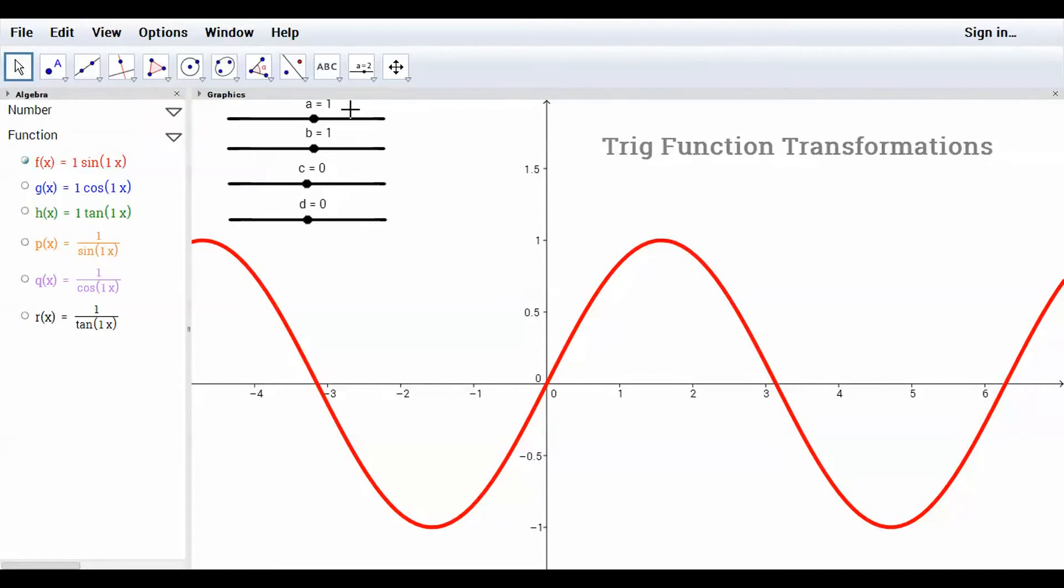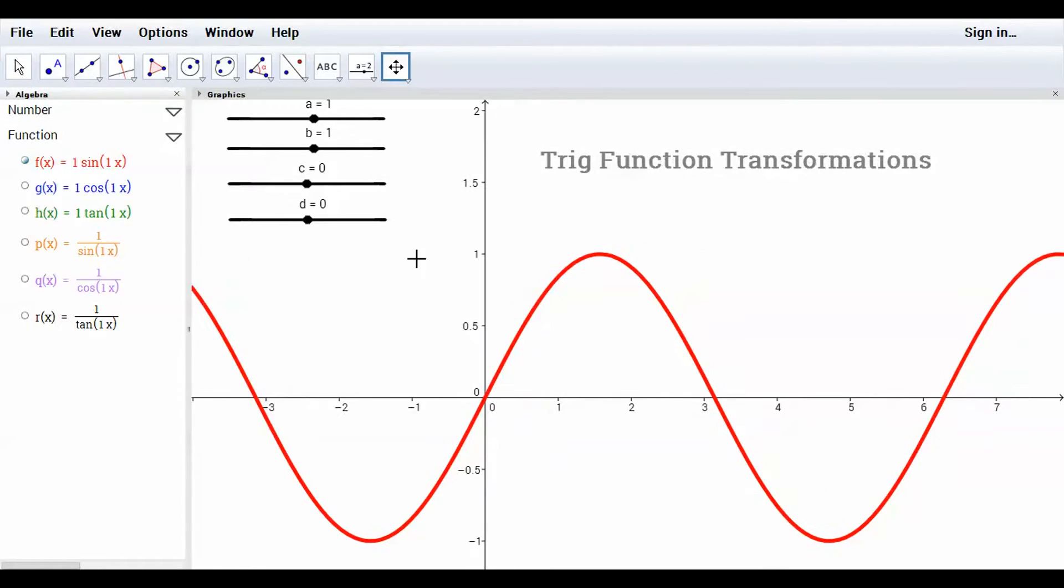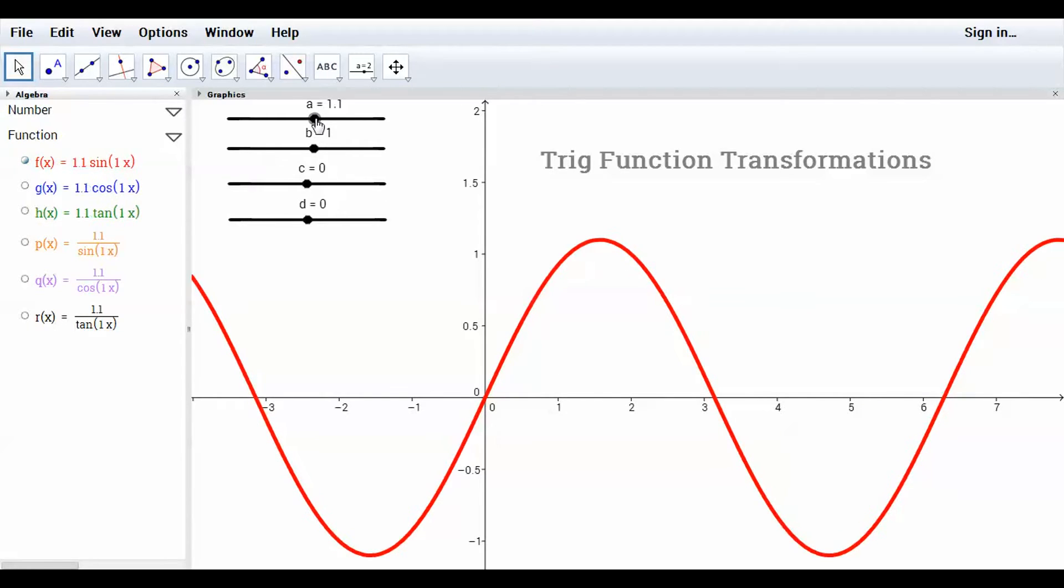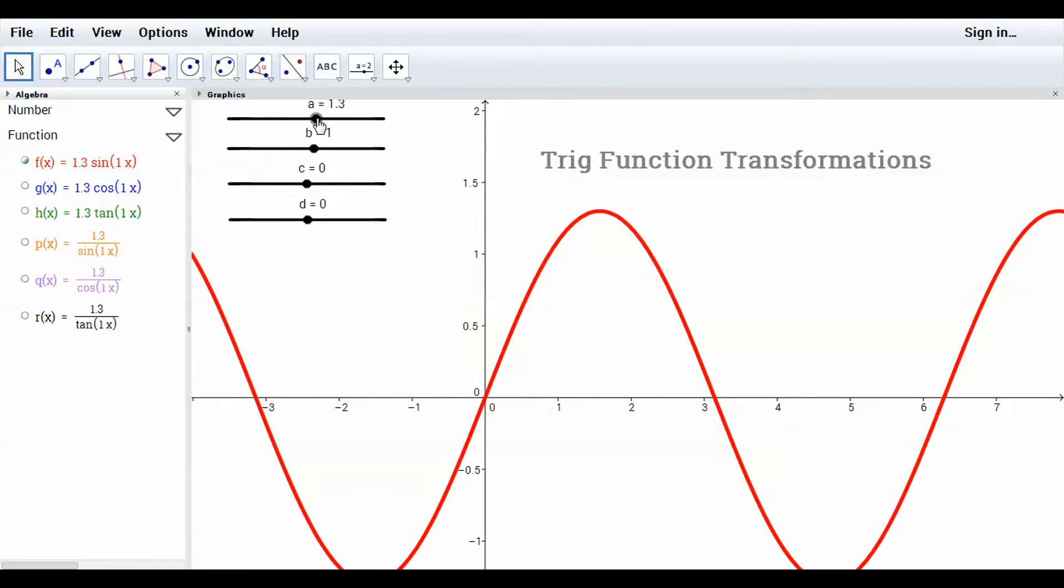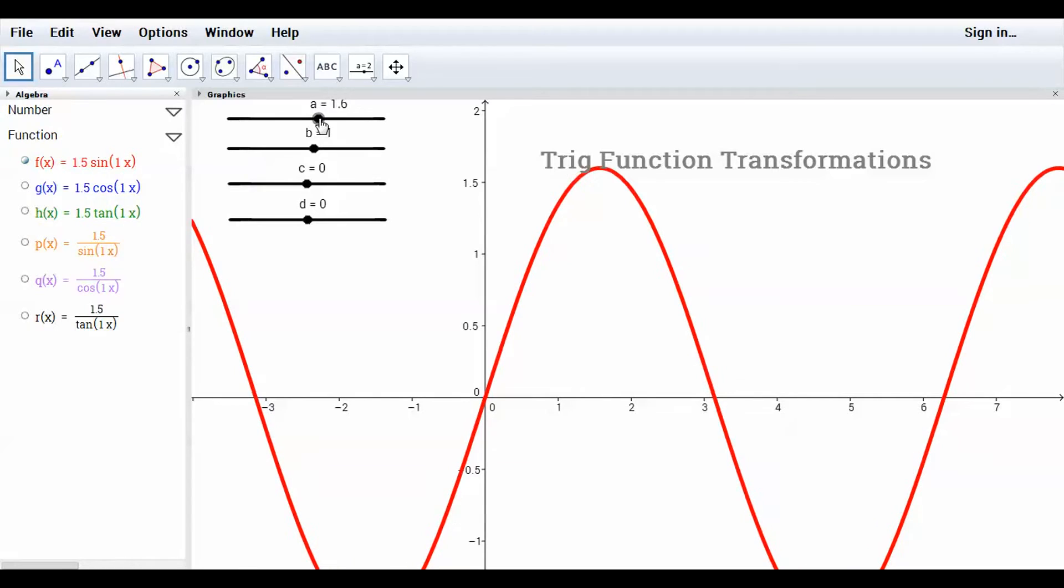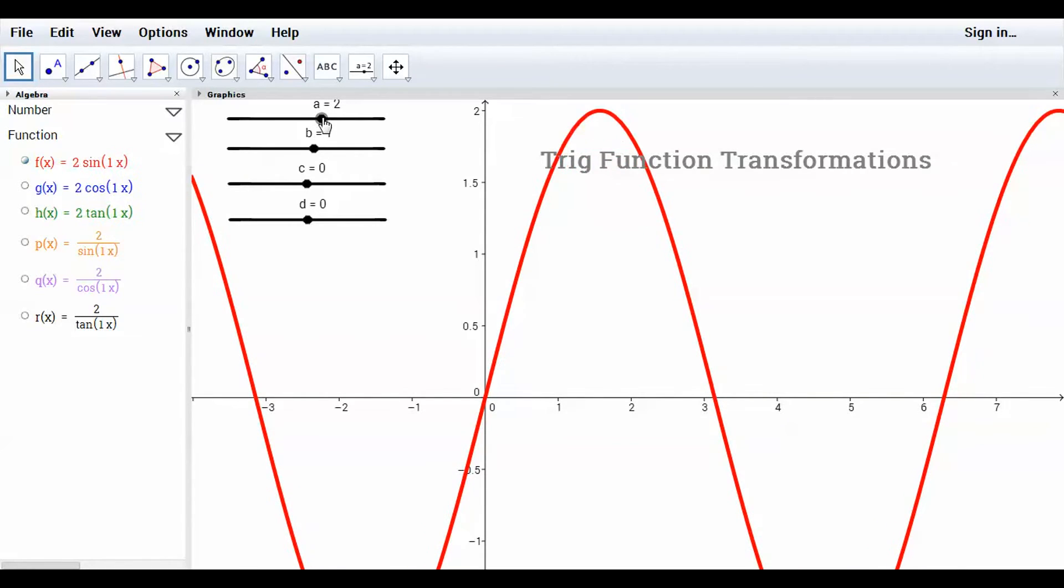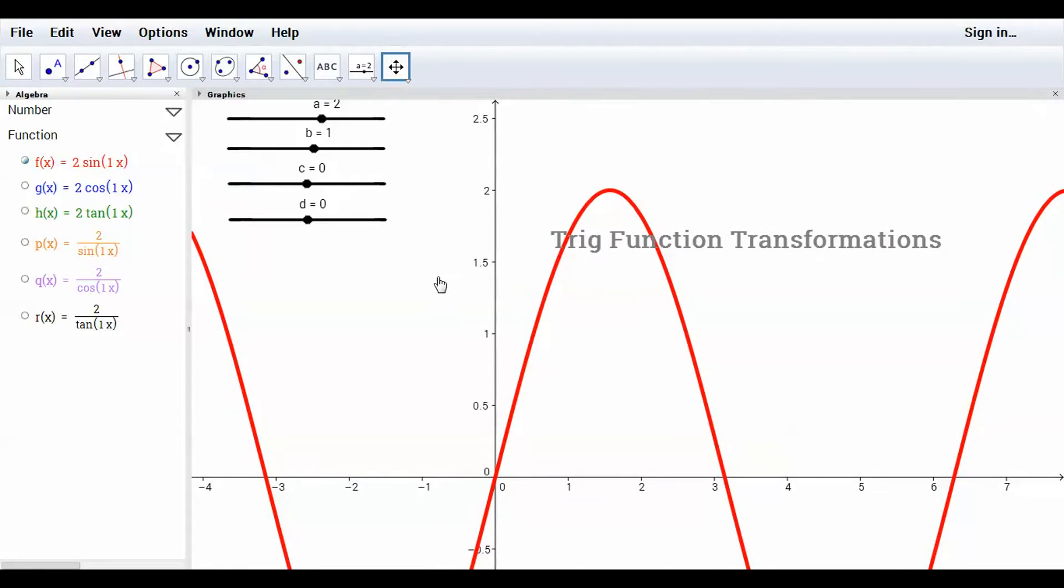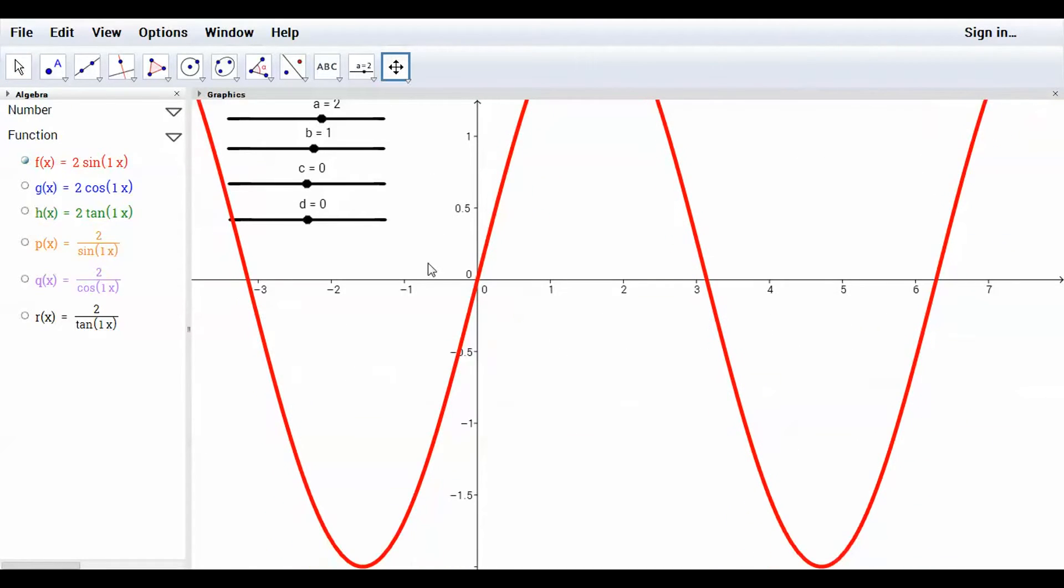So let me take the A value first. What you're looking at here is the sine curve, and if I change the A value, the amplitude value is normally one on sine, which means it goes up to one and down to negative one. But if I change that, if I make it a little bit bigger, now all of a sudden if my A value is two, now my graph goes up to two and it goes down to negative two.